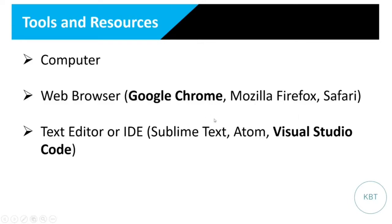You also need a text editor or an IDE — an integrated development environment. That's basically the software you are going to use to type your code and gives you that interface and environment. The options available are Sublime Text, Atom, and Visual Studio Code. I prefer Visual Studio Code. So primarily, we are going to use Google Chrome to view our styling and Visual Studio Code to type what we need to type.